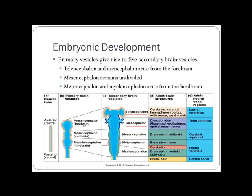The prosencephalon will break into the telencephalon and diencephalon. The mesencephalon stays as the mesencephalon. The rhombencephalon will form the metencephalon and myelencephalon. The telencephalon makes your cerebral hemispheres, cortex, white matter, and basal nuclei — so this is where higher-level thinking comes from.